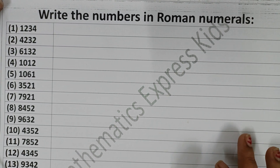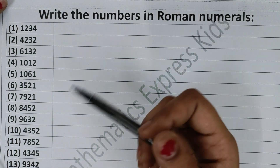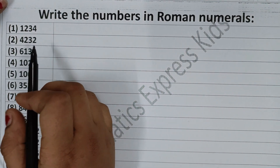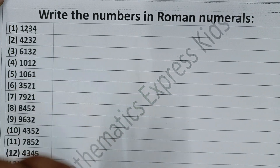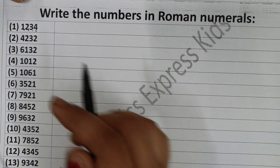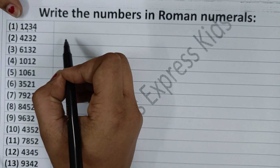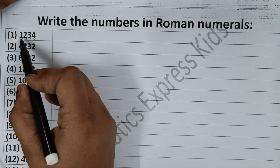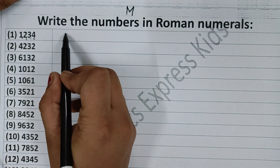Hello everyone, welcome to my class. I am here with my new topic: Roman numerals from 1000 and above. As you can see, I have written my first number, 1234, and now I have to write this number in Roman numerals. So 1234 — first write 1000. I have already discussed in my previous video how to write 1000, so go and watch that video. First, 1000 is written as M.